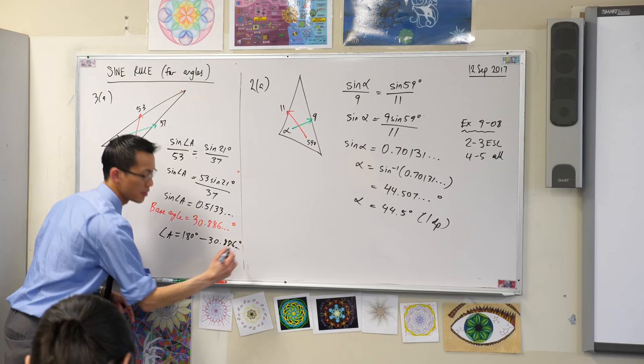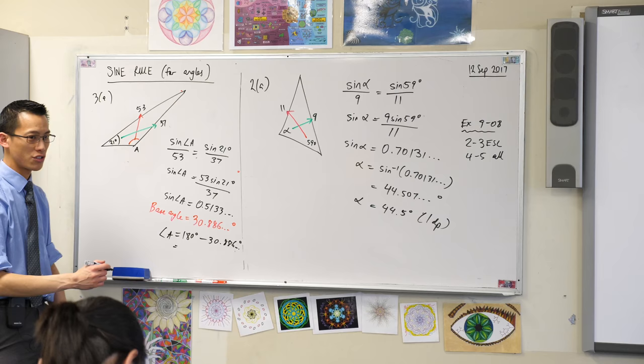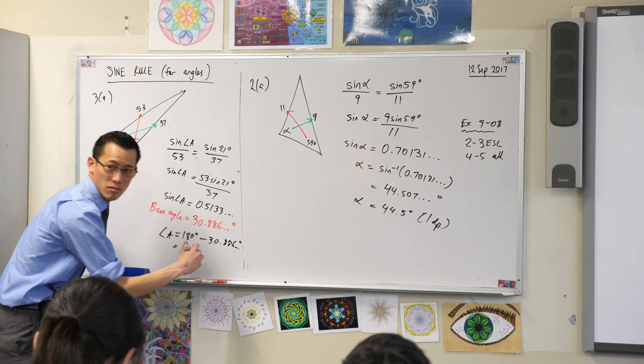Angle A is 180 take away that 886. Okay, this is going to give you some decimal places. What is that? 149 point something? 1, 1, 4? 1, 3, whatever? Dot, dot, dot, dot, dot.